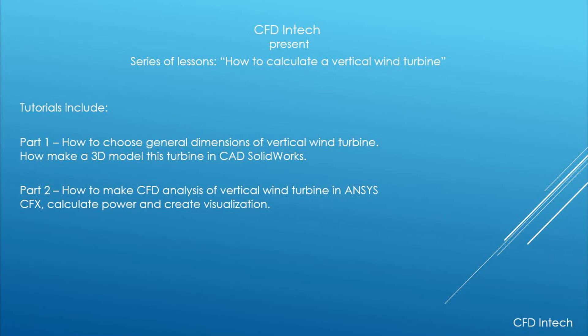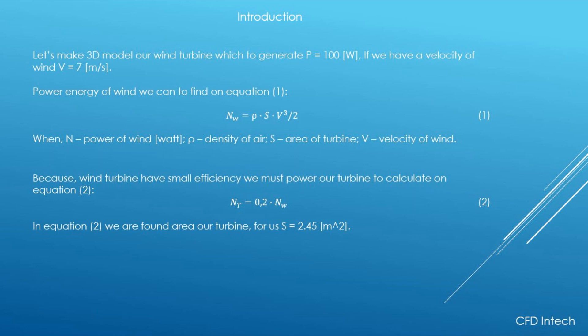Hello everyone. In this video I will show how to calculate a vertical wind turbine, then make CFD analysis in ANSYS CFX. Let's make a 3D model of our wind turbine, which will generate power equal to 100 Watts if the velocity of wind is 7 meters per second.